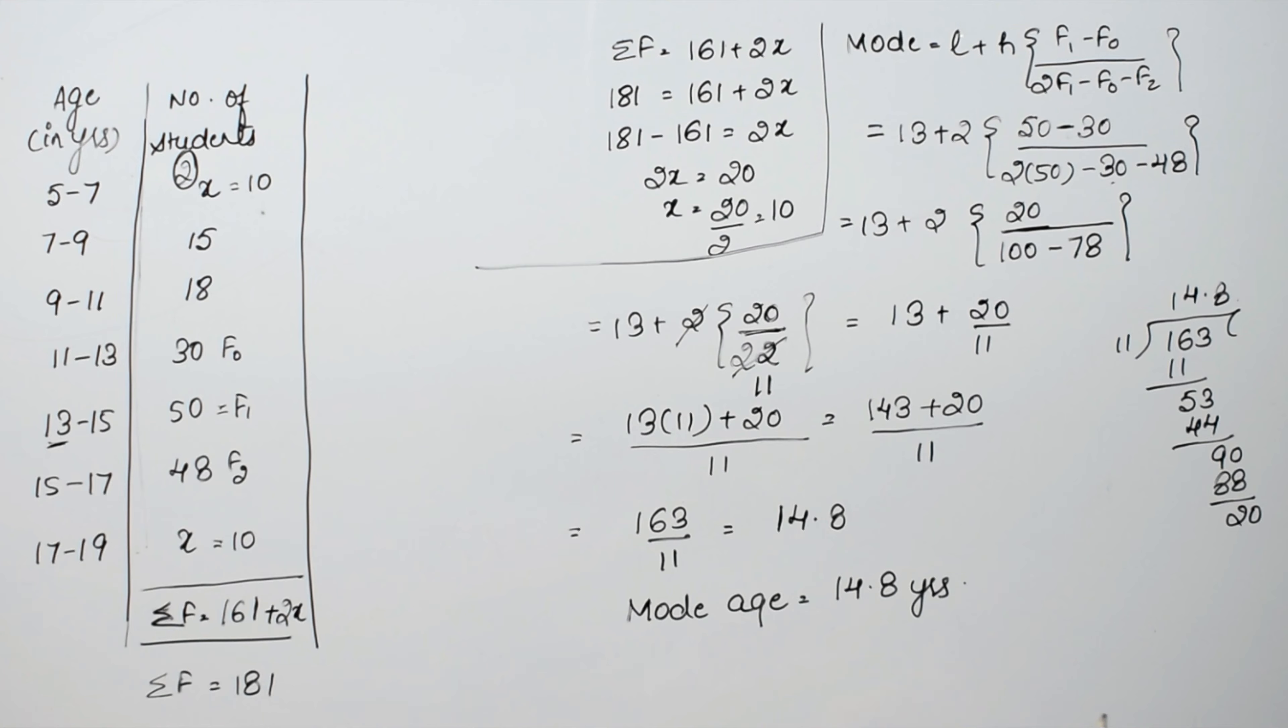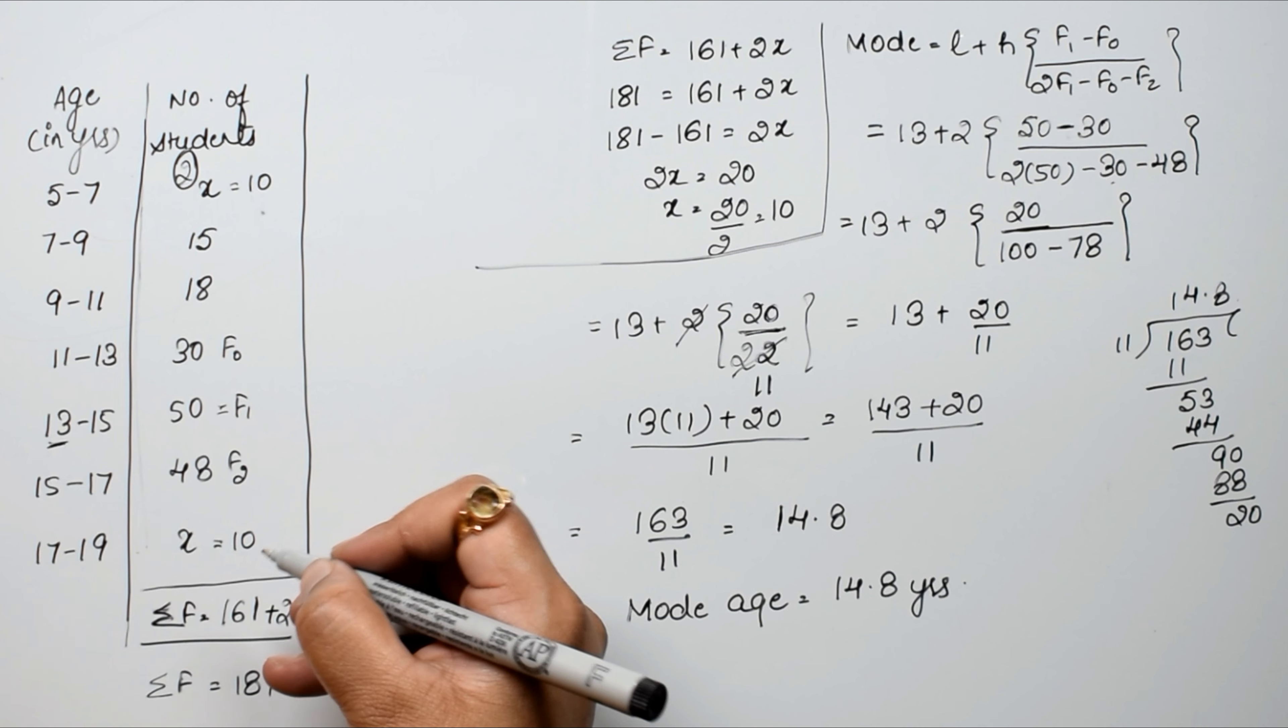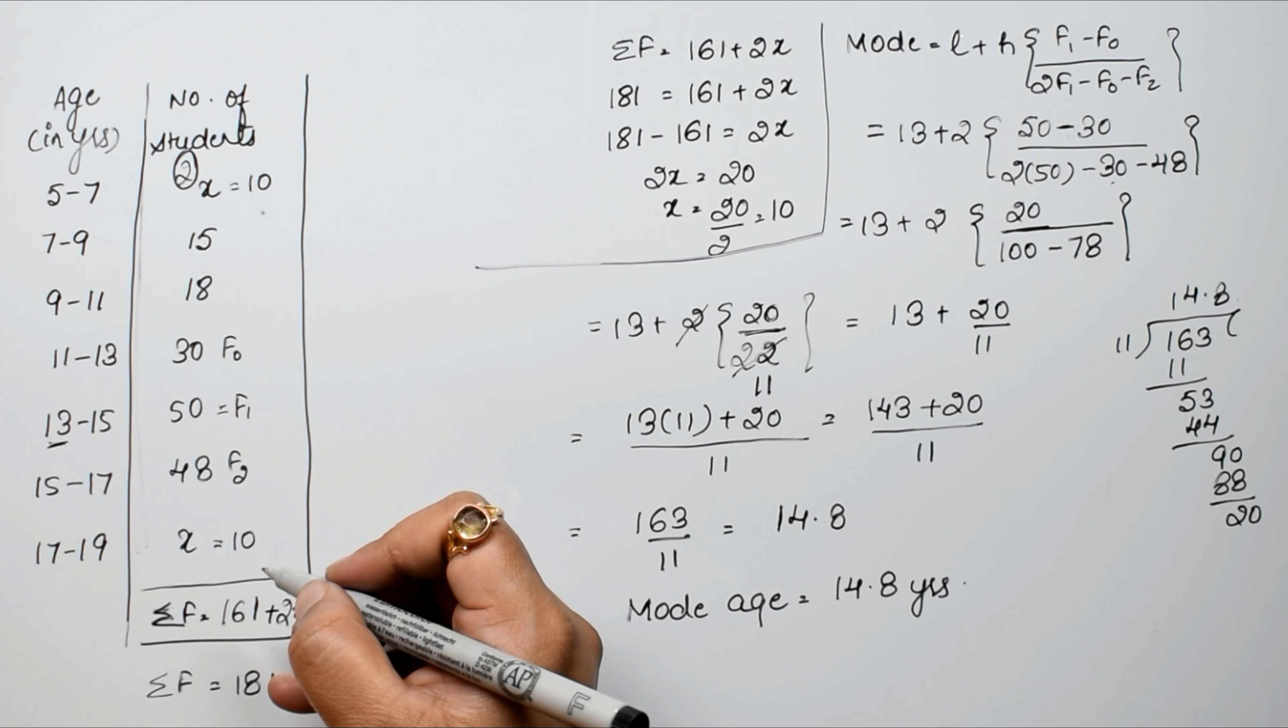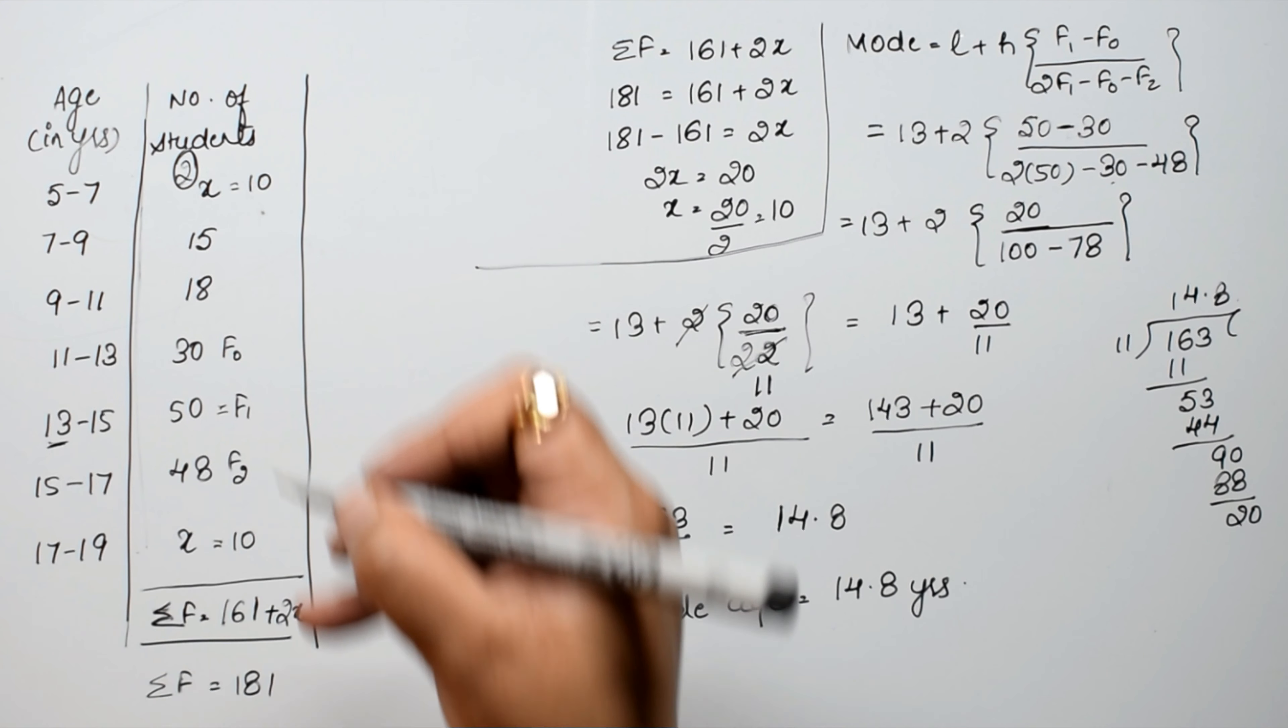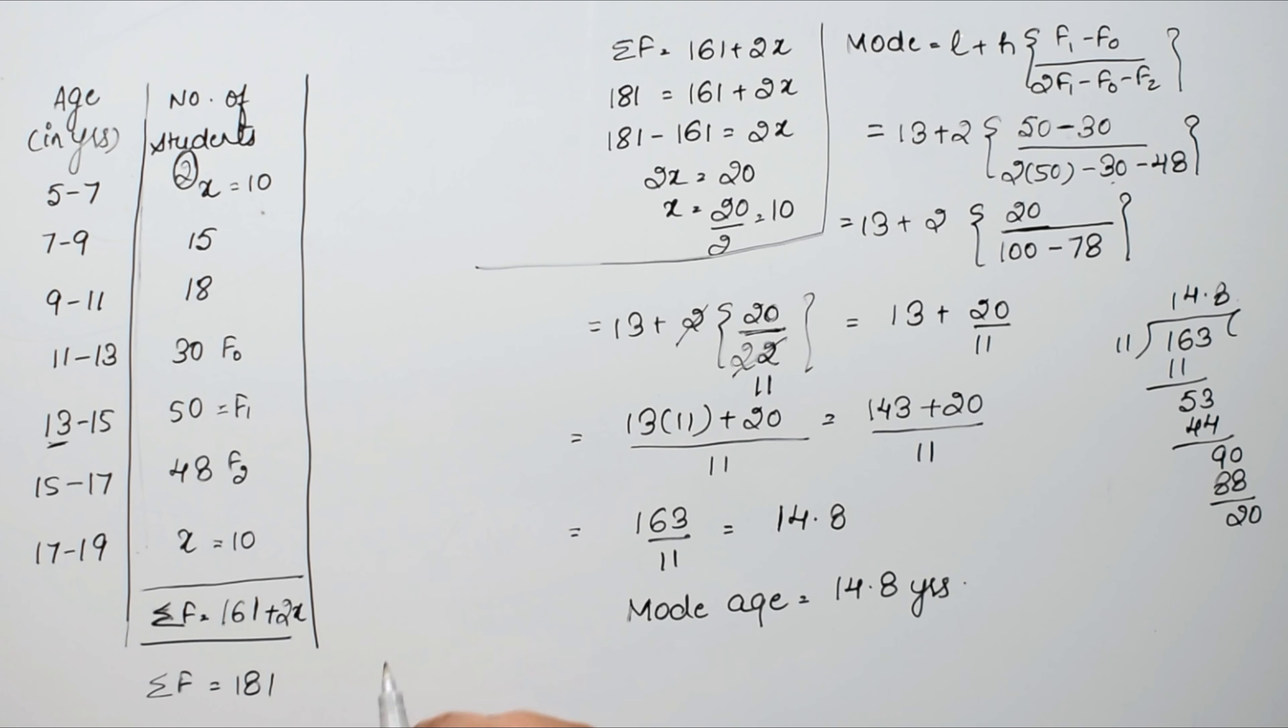Friends, I don't know how they gave this book missing frequencies as 10 and 11. If you keep it that way, the sum will be more than 181, and they have already specified that the total is 181. That's why the calculation is wrong here. Accordingly, the answer is wrong. The book says 18 years, but the exact answer is 14.8 years.